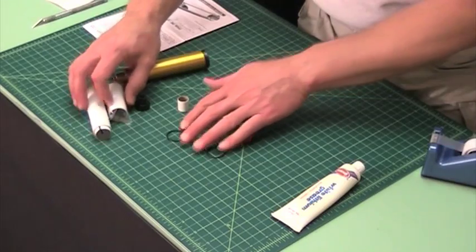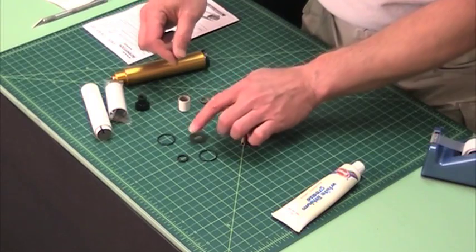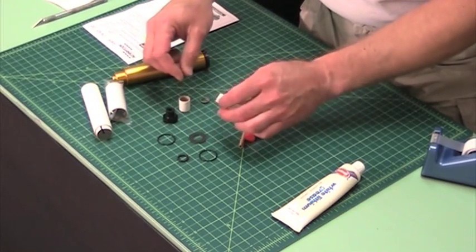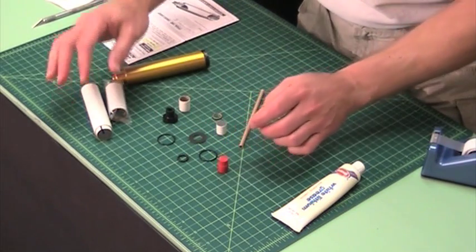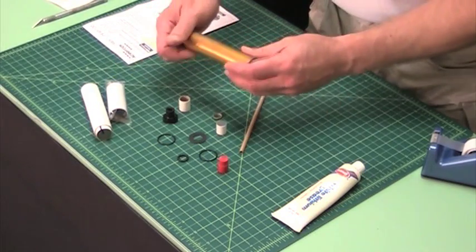You should have three o-rings, a nozzle, the delay, a spacer, the ejection charge, propellant, the igniter, and your casing of course.